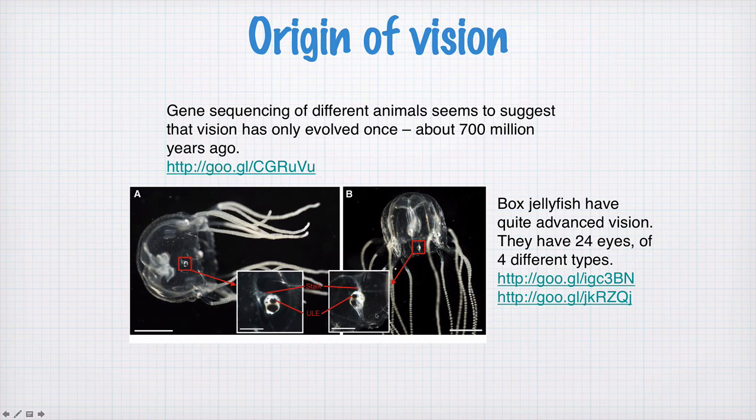The box jellyfish is one of the most deadly creatures in the sea—extraordinarily painful to get stung by and it can kill you. Despite looking like a primitive, simple animal, it has quite advanced vision with 24 eyes of 4 different types. They can use upward-pointing vision to see out of the water and navigate by looking at features like mangroves above their heads.